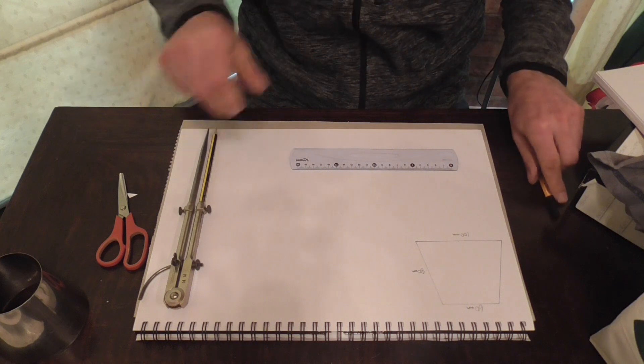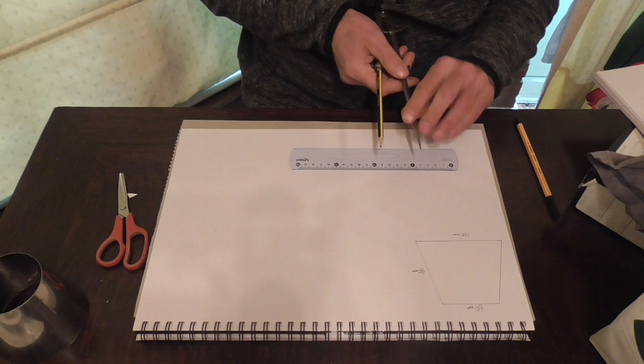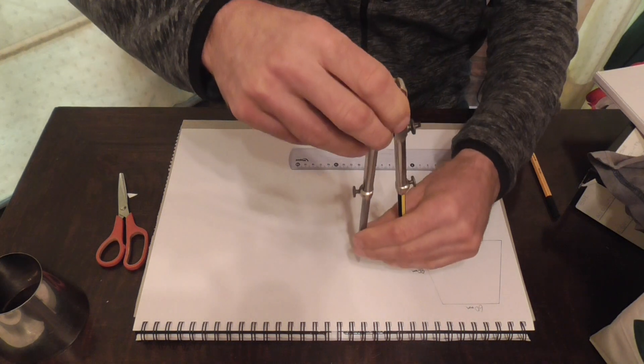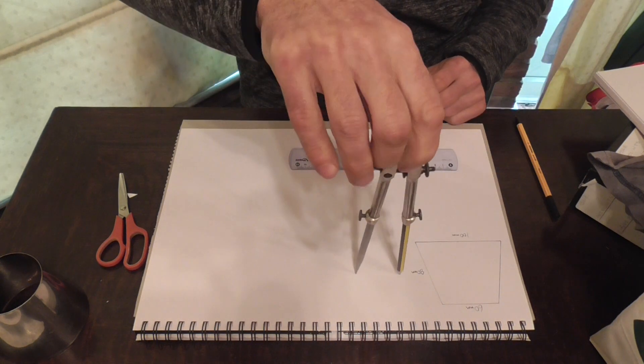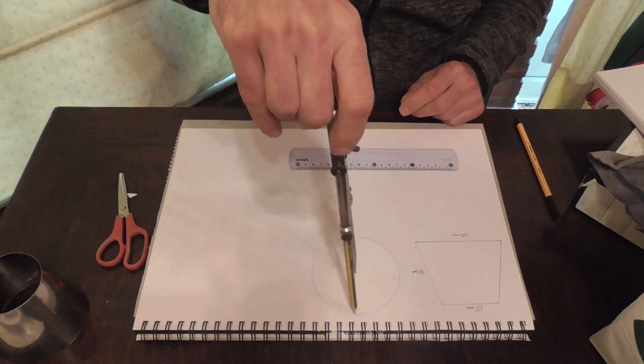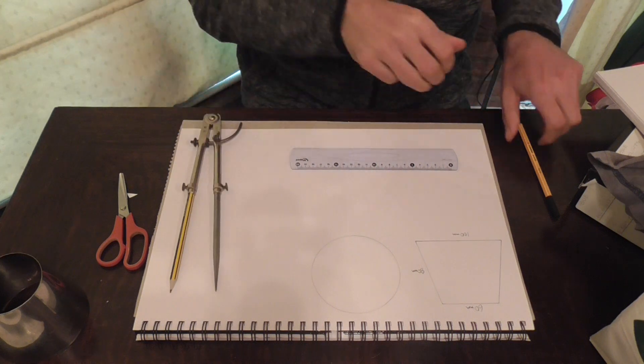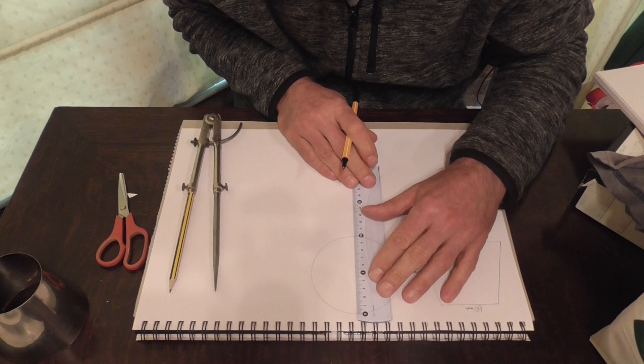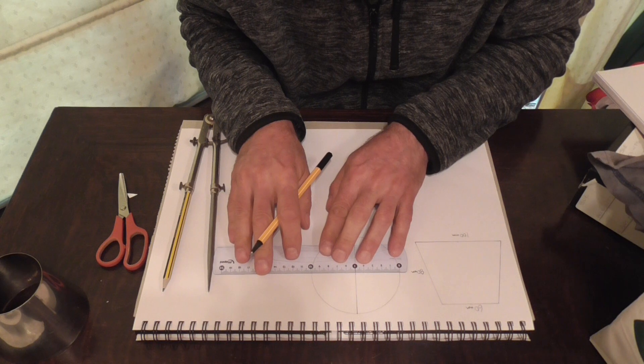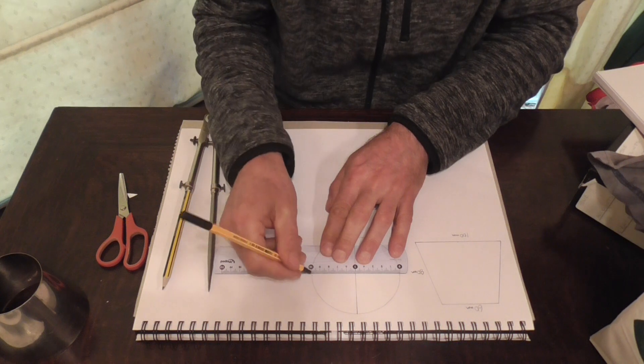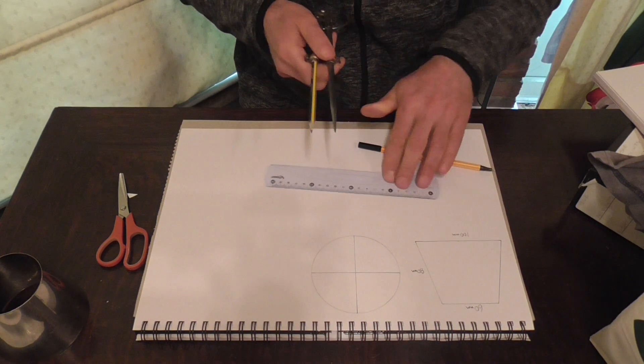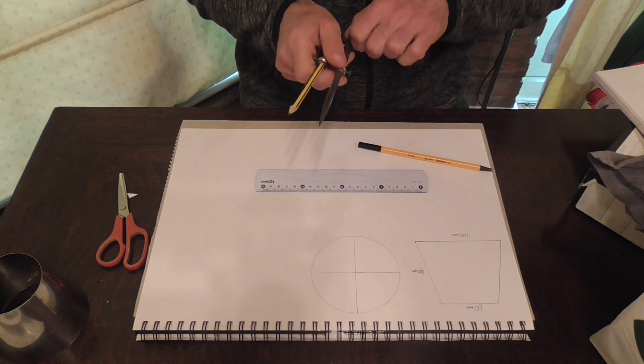Next to that we need to draw a plan view, so we open up our dividers to 50mm to give us our 100mm diameter and pop that in. We'll divide that up into quadrants and then divide to 30mm to give us our 60mm diameter and just pop that in the center.